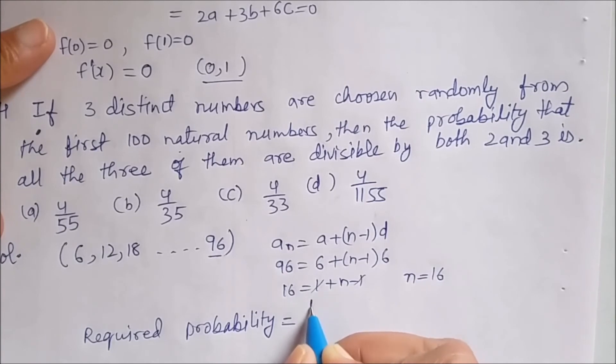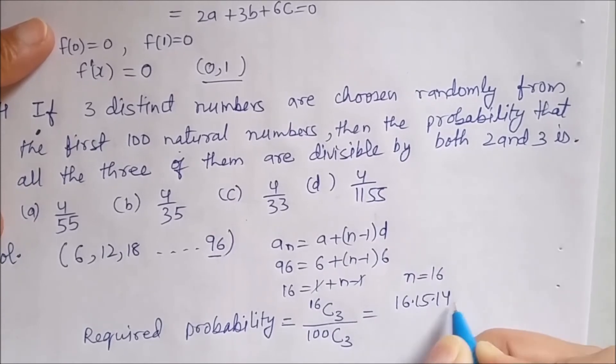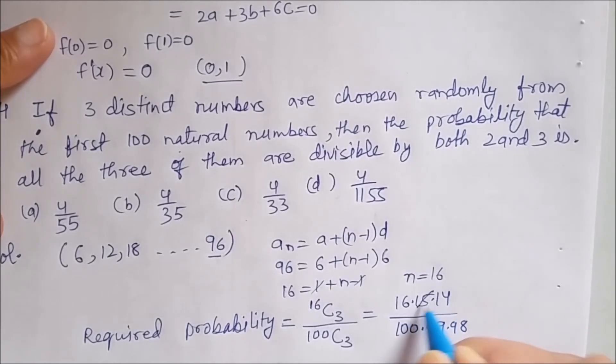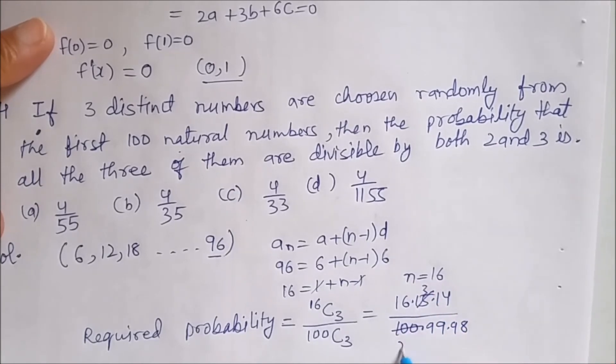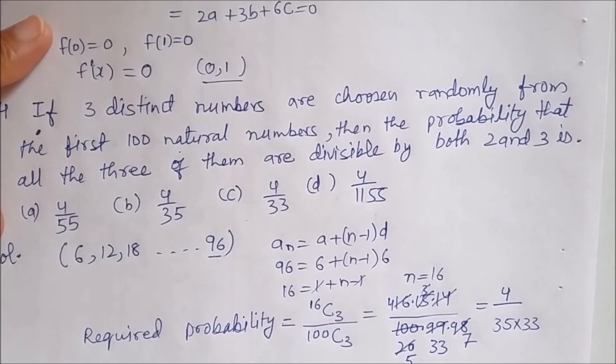Required probability will be favorable cases. So out of 16 cases I have to choose 3. And total number of cases are 100. Out of 100 I have to choose 3. So this will give me 16 × 15 × 14 over 100 × 99 × 98. This will go by 5. I will get 3 here. This will be 20. This 3 and this will go. I will get 33 here. 4 4s are 16. 4 5s are 20. And this 14 will go 7 times. So 7 here. In numerator I am having 4. In denominator this is 35 multiplied by 33. And this will give me 4/1155.